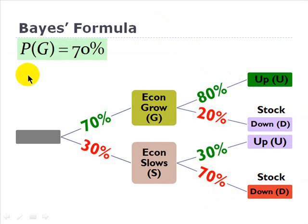So the unconditional probability. Imagine we're sitting out here in front before anything happens. What is the probability that the economy will grow? That's an unconditional probability of 70 percent. It doesn't depend on anything.